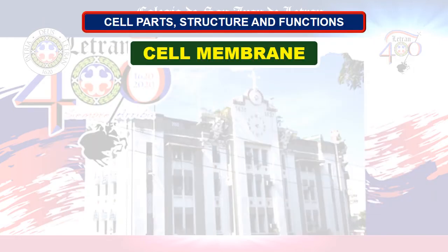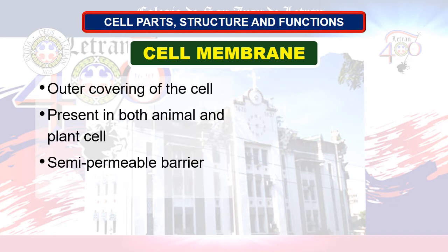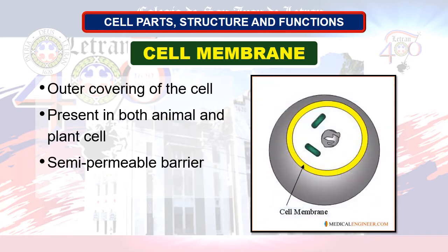First, let's talk about cell membrane. Cell membrane, or plasma membrane, encloses and protects the entire cell. It is a triple layer containing protein and lipids. It is the outer covering of the cell, present in both animal and plant cells. It has a semi-permeable layer.